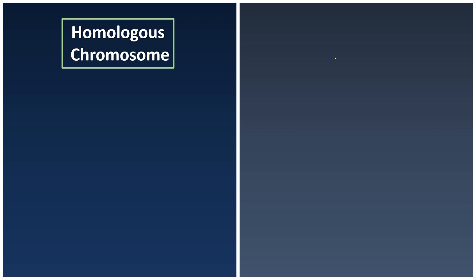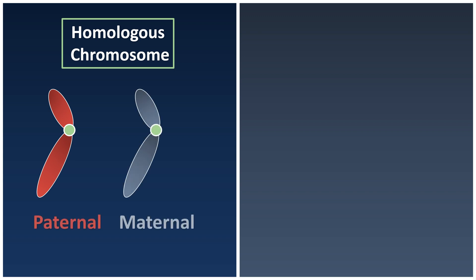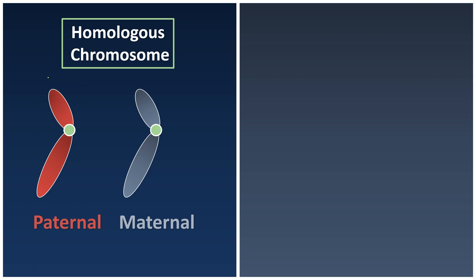Before we go into more details about meiosis, let's learn about what is the meaning of homologous chromosomes. As we have mentioned before, you are the product of your father and your mother. This is why we will inherit chromosomes from both of them — one from the father and one from the mother. So this is a pair of homologous chromosomes, because they are the same length and they are deciding the same characteristic. This might be deciding your eye color. So don't forget, you are the product of your father and mother and not only one of them.